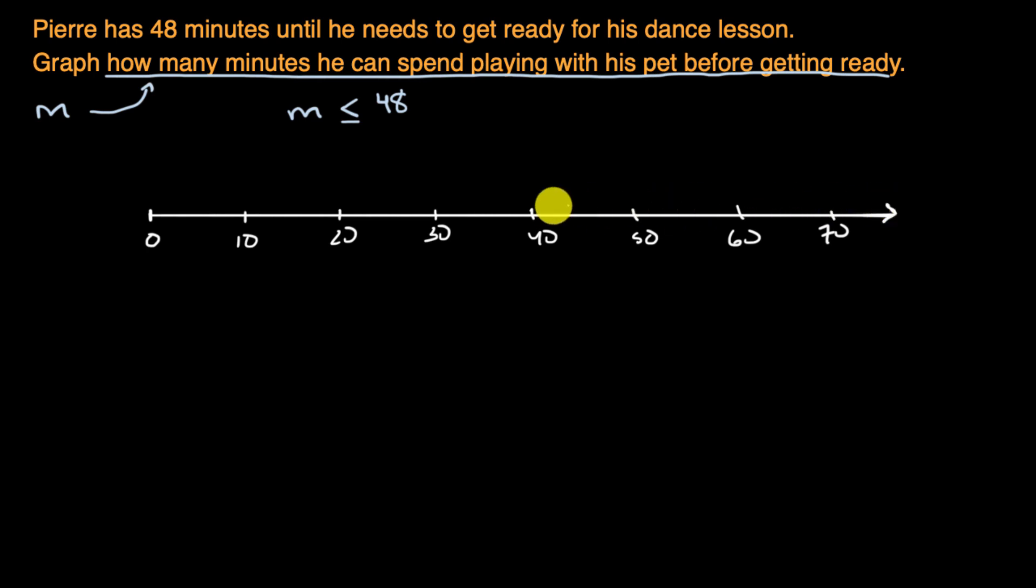This is going to be essentially the values of M that are going to be okay, as long as he's prepared for his dance lesson. M is less than or equal to 48. So what we can do is we can go to 48, which is, let's see, this would be 45. So 48 is going to be right around there.